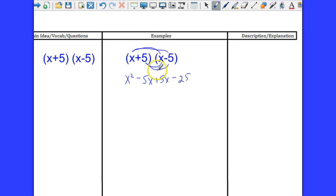Now you may already see what's going to happen here. Notice we have minus 5x plus 5x are like terms, and that basically adds to 0. So those are eliminated and we're left with x squared here minus 25. So that's it. That is the product of x plus 5 times x minus 5, x squared minus 25.